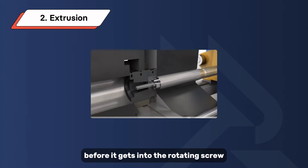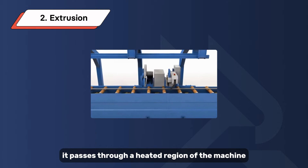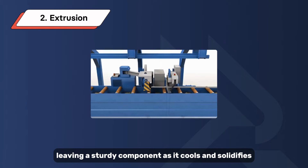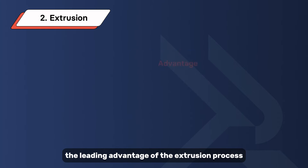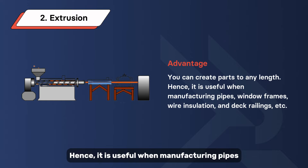As the screw forces the plastic forward, it passes through a heated region of the machine. The molten polymer is then extruded into a die, leaving a sturdy component as it cools and solidifies. The leading advantage of the extrusion process is that you can create parts to any length.